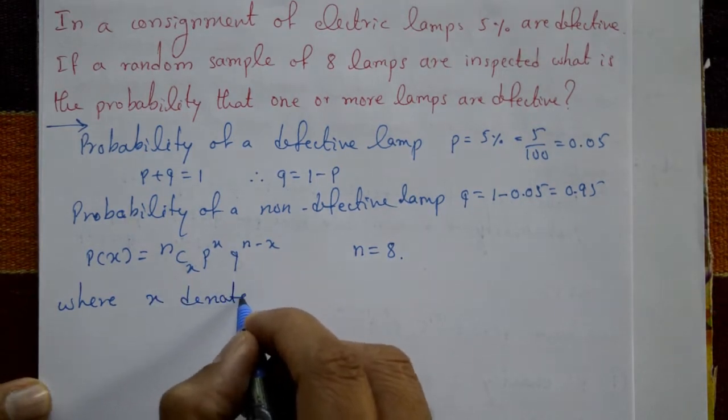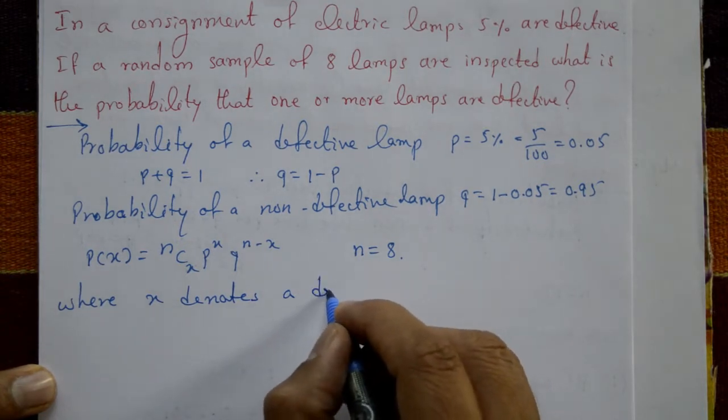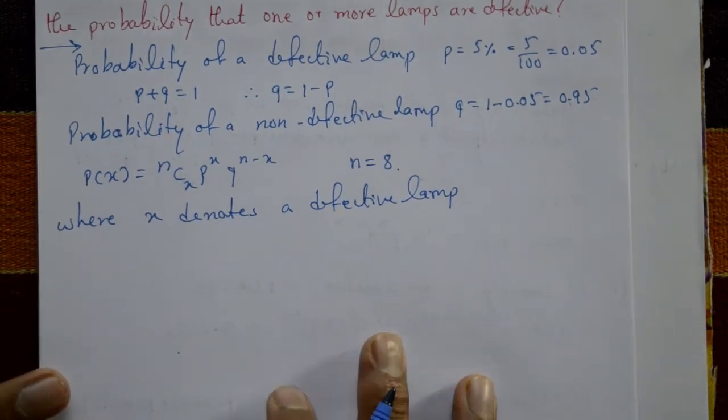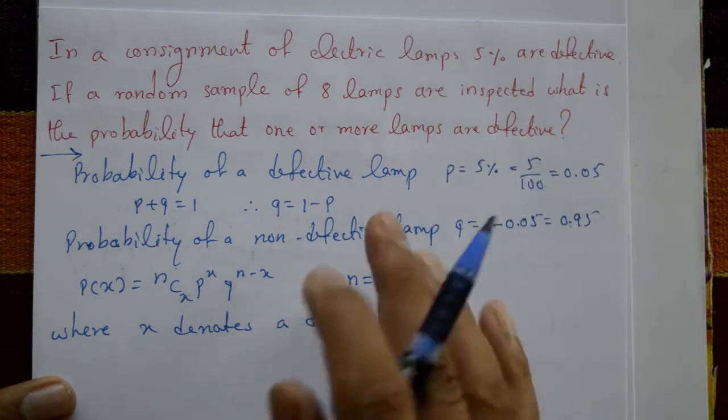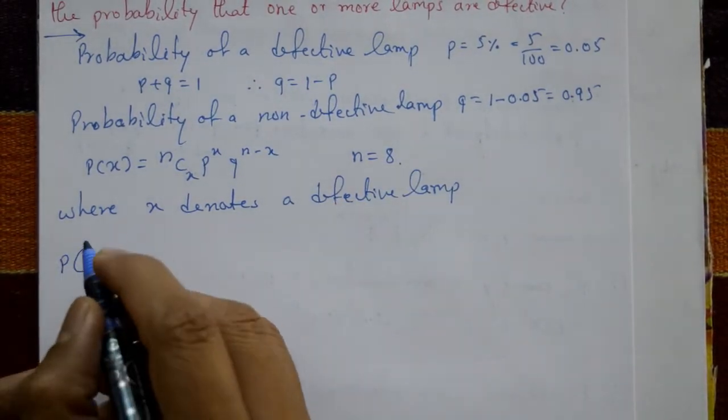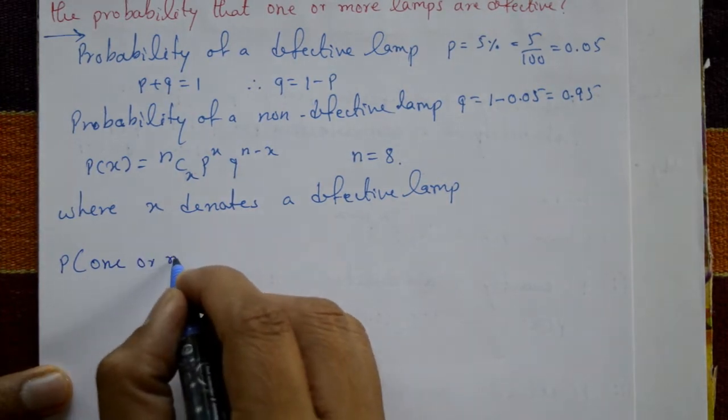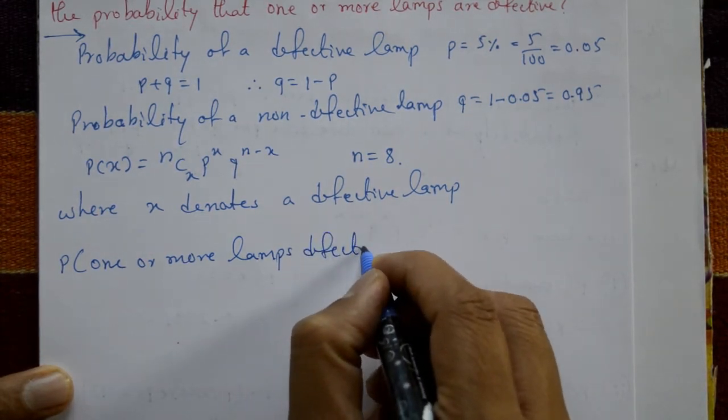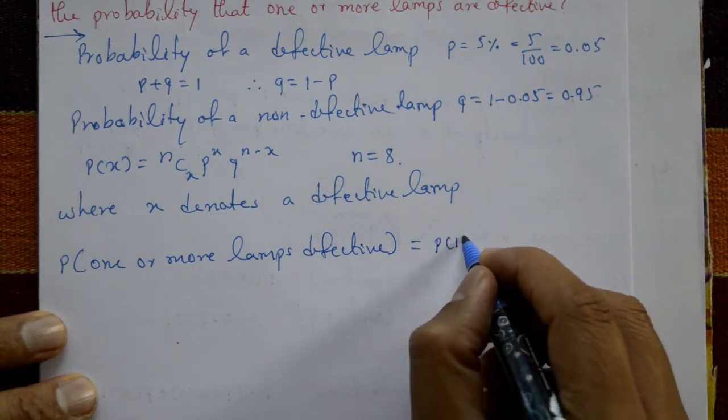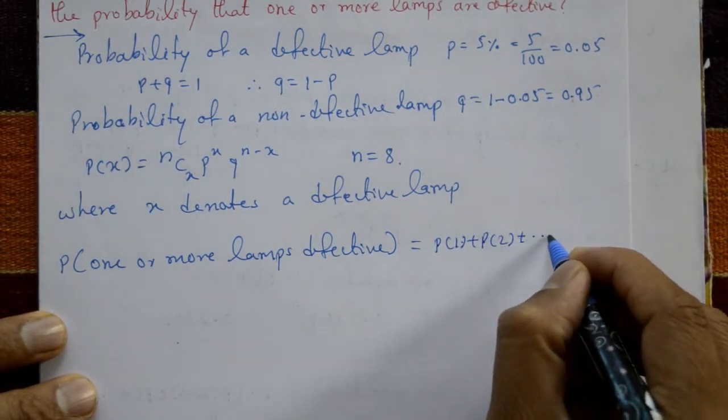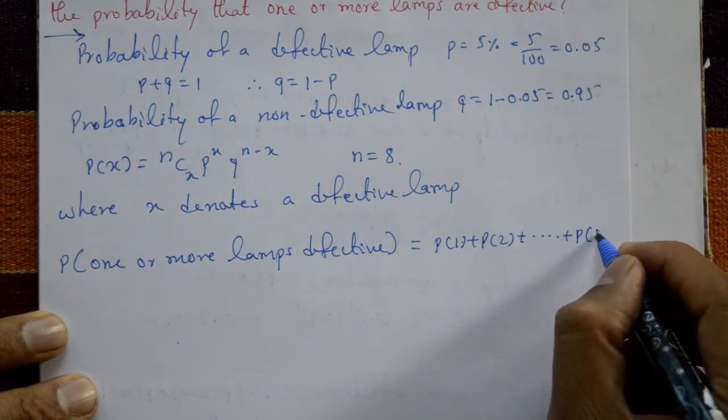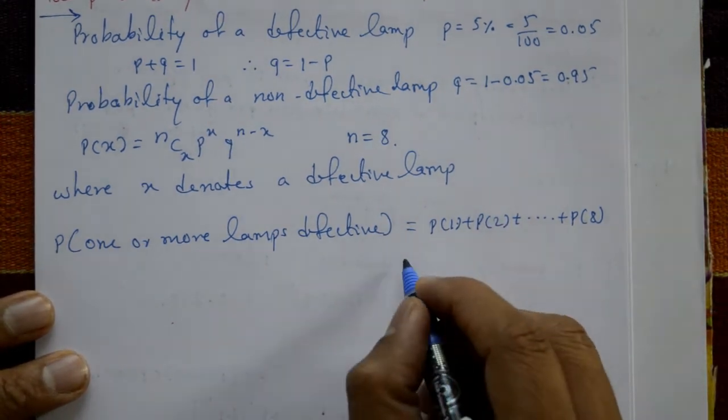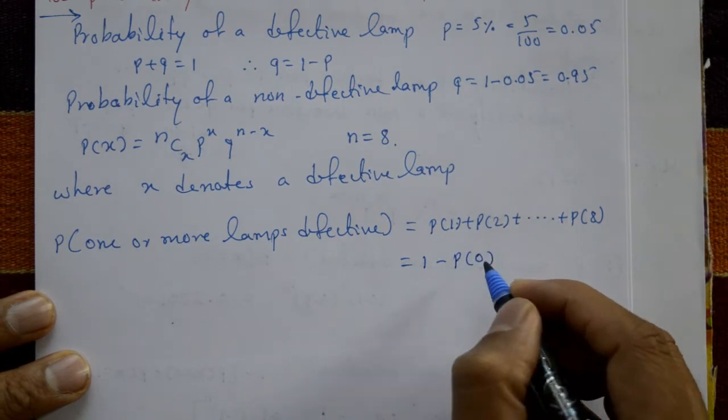In this example, X denotes a defective lamp. Now find the probability of one or more lamps are defective. Probability of one or more lamps defective means probability of one plus probability of two plus probability of three up to probability of eight. Total eight terms. We don't need to calculate all eight terms, so better use 1 minus P of zero, means no defective.